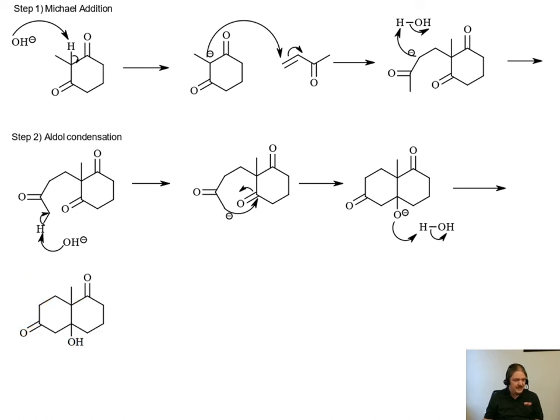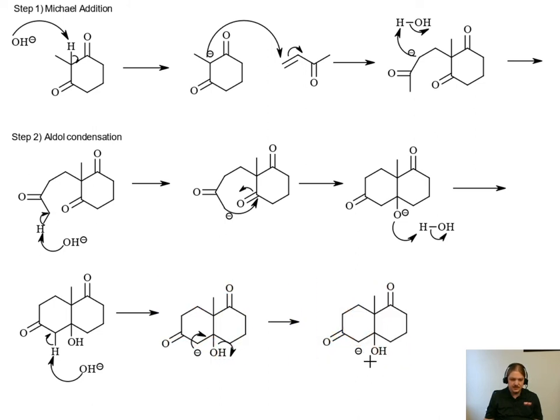And how this reaction or why this elimination is possible and why it follows the mechanism that it does is the subject of the video on the aldol condensation. So I'm not going to spend a great amount of time explaining the particulars of this specific E1CB elimination mechanism and why it happens. But we first deprotonate alpha to the carbonyl group and then we have loss of leaving group as a second step. And that is the full mechanism of the Robinson annulation.